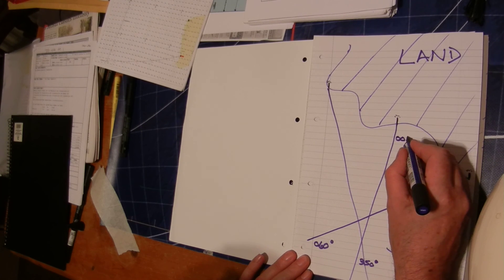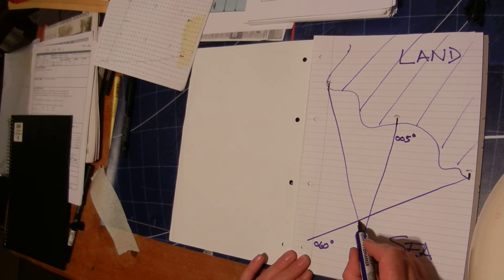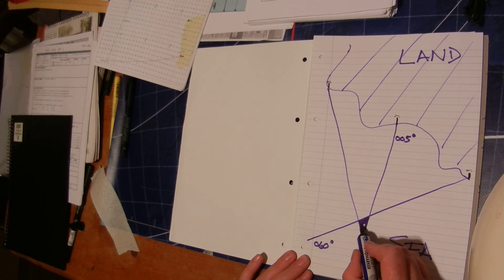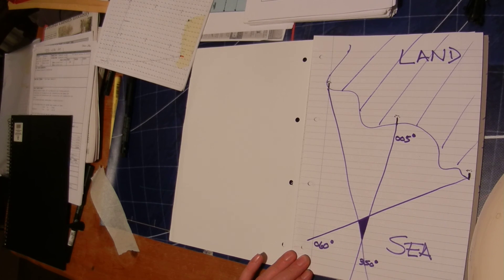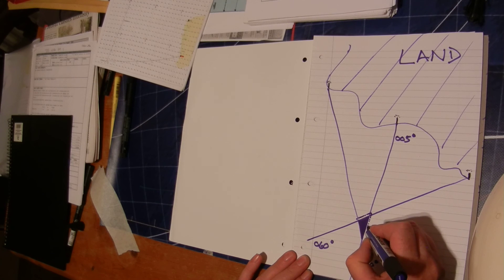That one says we're on a 005 degree bearing to the third lighthouse. What happens is you end up with a triangle. Depending on the size of the triangle, that's how accurate you've been. If you've got a small triangle, you might be pretty sure of your location. You're probably in the triangle, but you might be just outside it on a sort of blurry edge of the triangle.